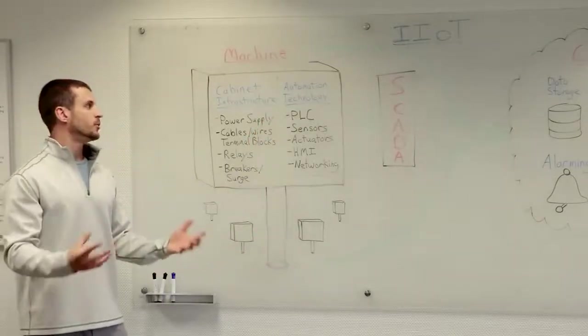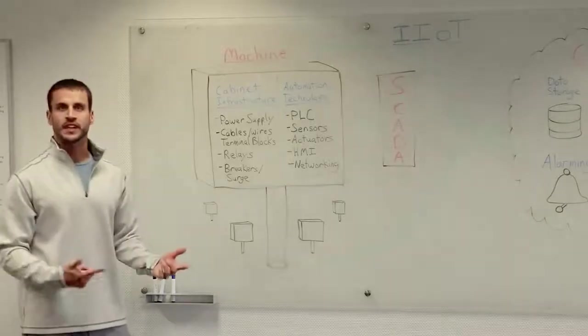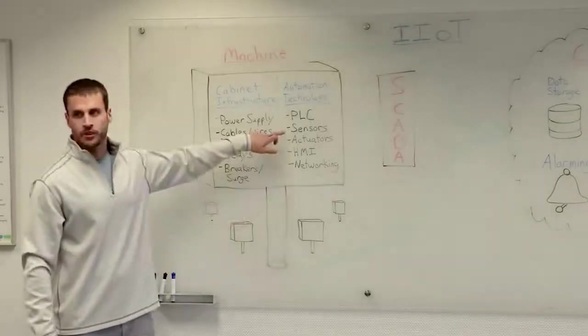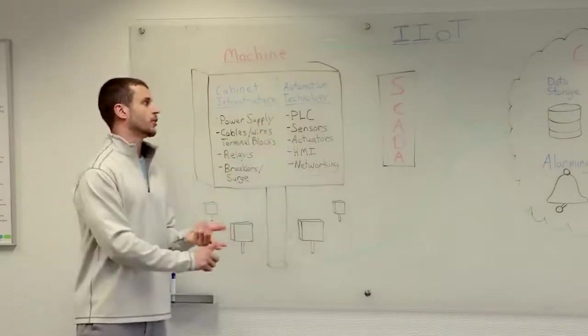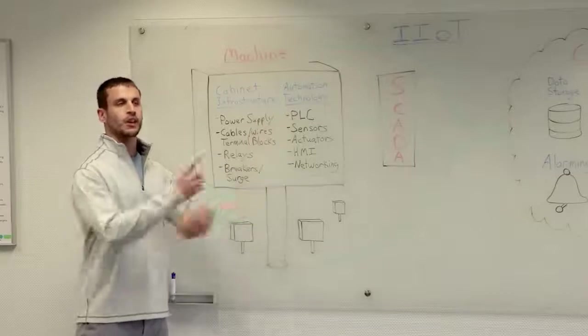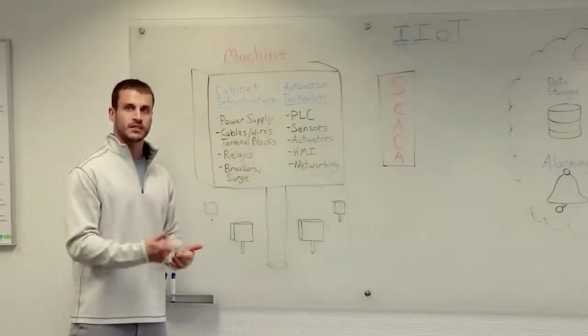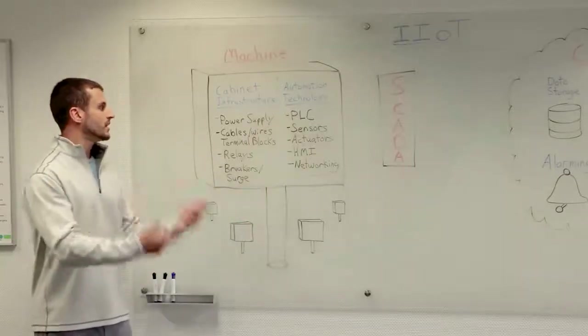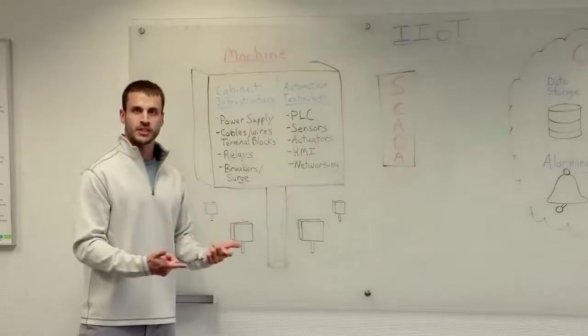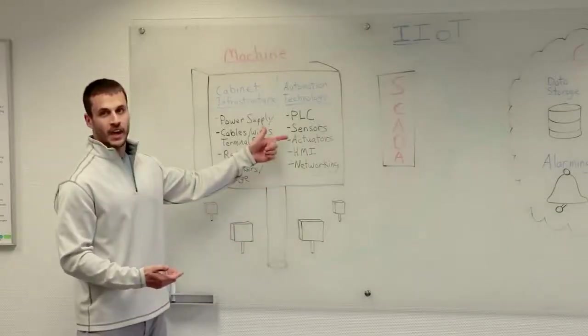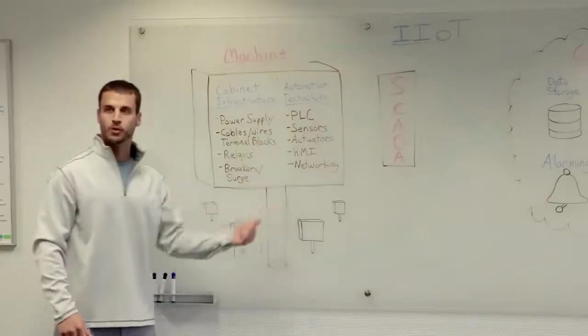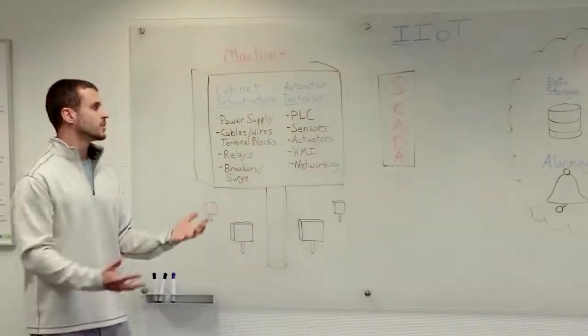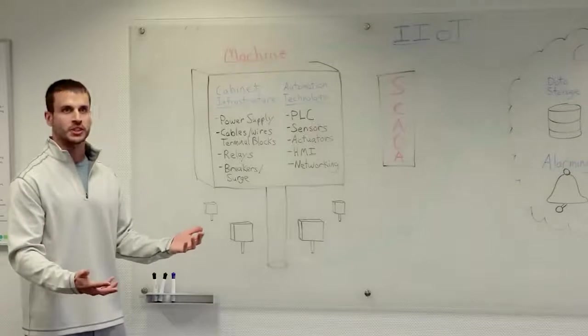The PLC is really the brains of the operation. It is the computer that is collecting all this data being read by sensors out in the field. These sensors are reading things like temperatures and pressures and voltage and current. And the PLC is taking all of that data, it does some processing on it, and then it uses that data to make some logical decisions and turn on and off actuators or the outputs. These are your things like your pumps and your motors and your valves, the components that are actually running the process of the machine.